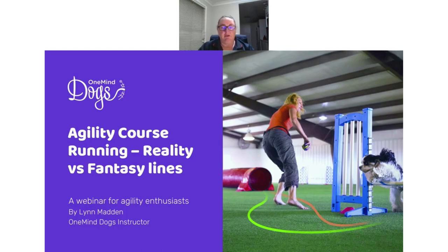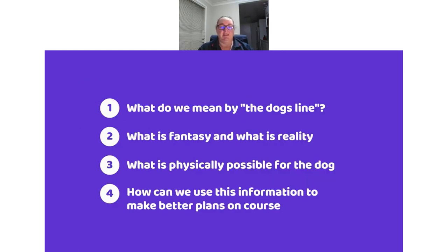I'm not sure how many of you actually think of the lines that your dogs take. Some of us just run the agility course and hope that our dogs follow us and go between obstacles. But do you actually drill down and have a look at how your dog is performing those obstacles? Does it match with what you think they do in comparison to what they do in real life? What we're going to cover tonight is what do we mean by the dog's line, what is a fantasy line and what is a reality line, what is physically possible for our dog to do, and how we can use this information to make better plans on course.